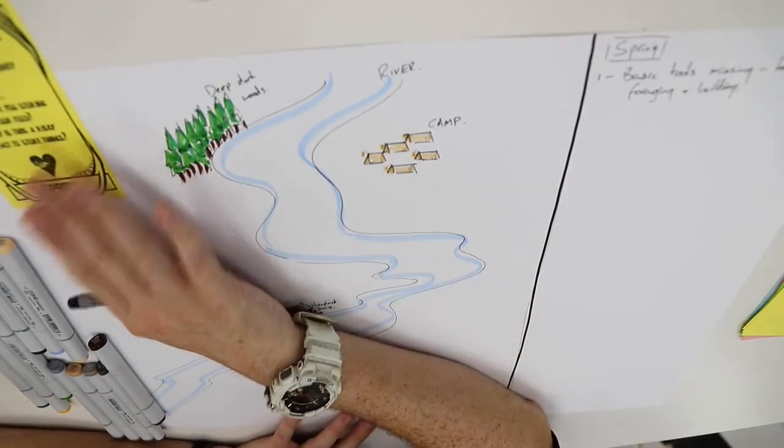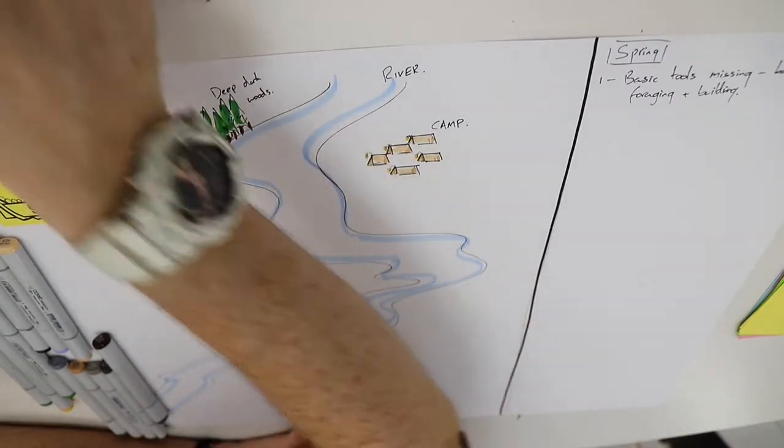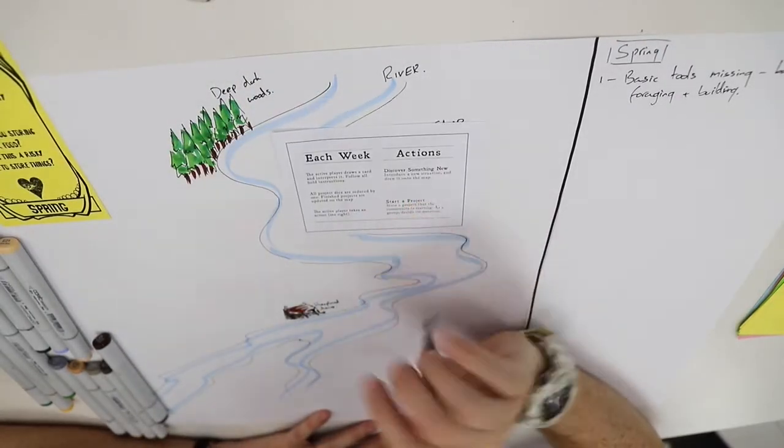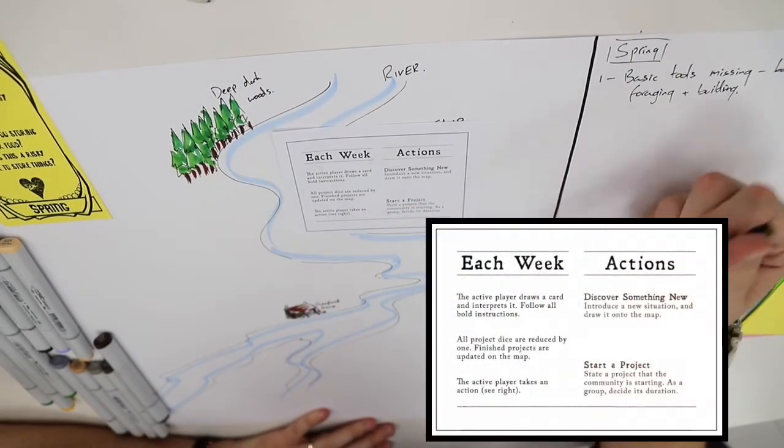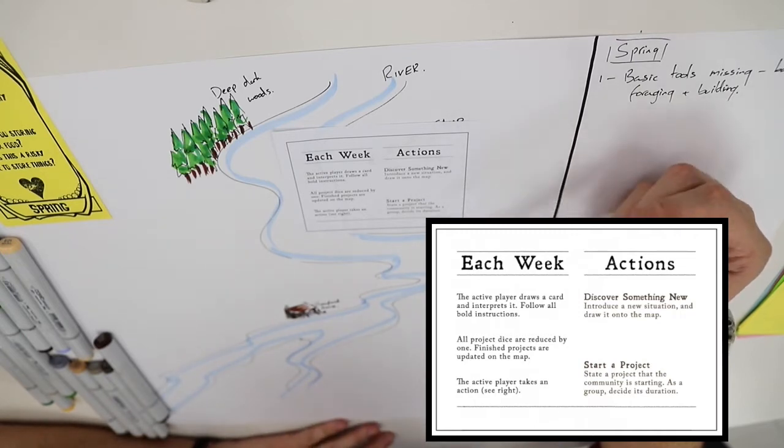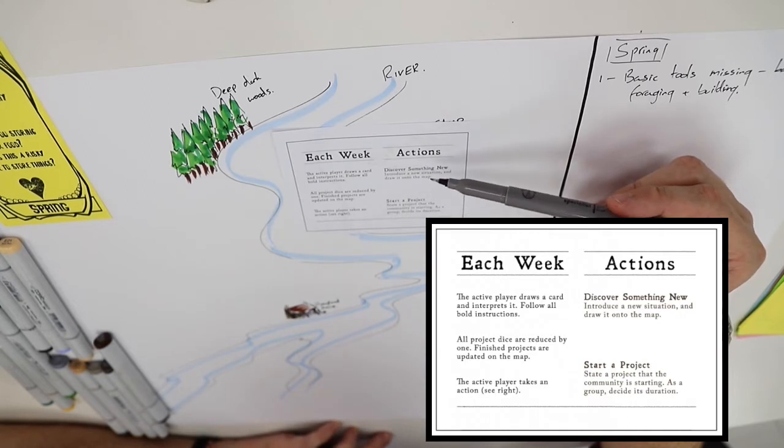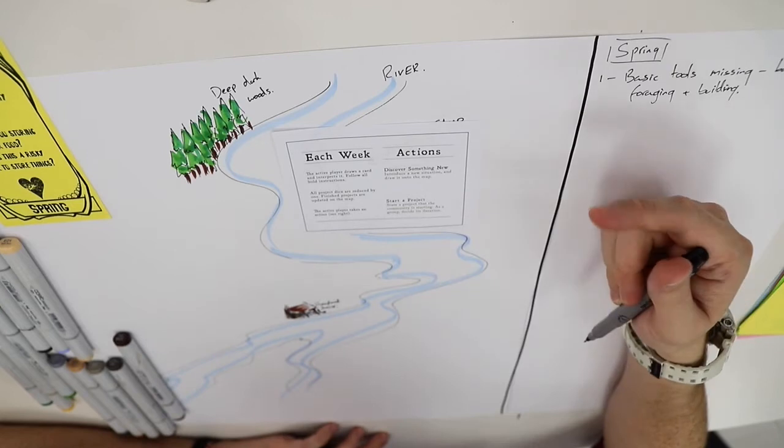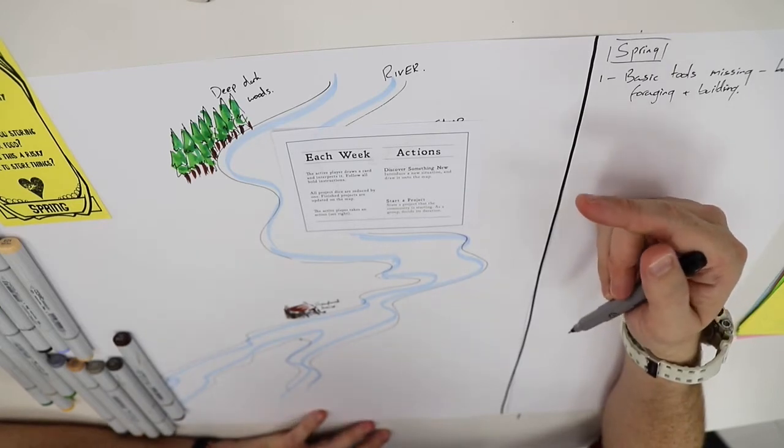After we've read that from the card, we're going to put this card over to one side. The second part of our turn comes from the action sheet. We have two actions - this is a stripped down version of The Quiet Year game which provides you with fewer actions. The actions we can choose from here are to discover something new or to start a project. Let's give an example of what both of these would look like.